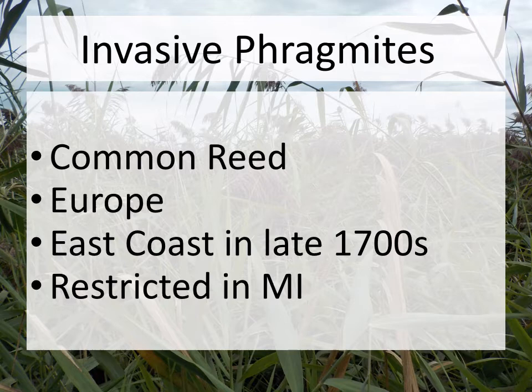This is invasive phragmites, also called common reed. It is native to Europe. The first infestation in the United States was on the east coast in the late 1700s. It is a restricted species in Michigan, meaning it is illegal to buy, sell, or move phragmites.